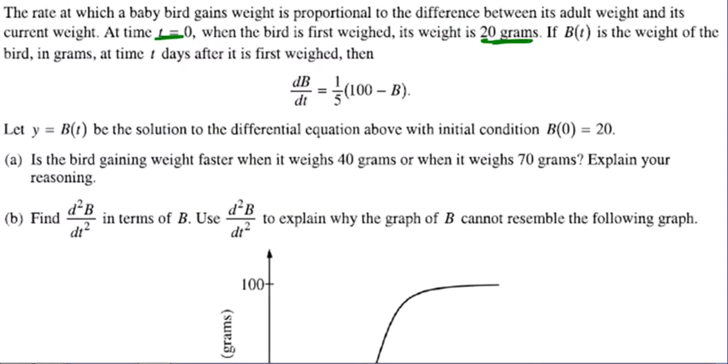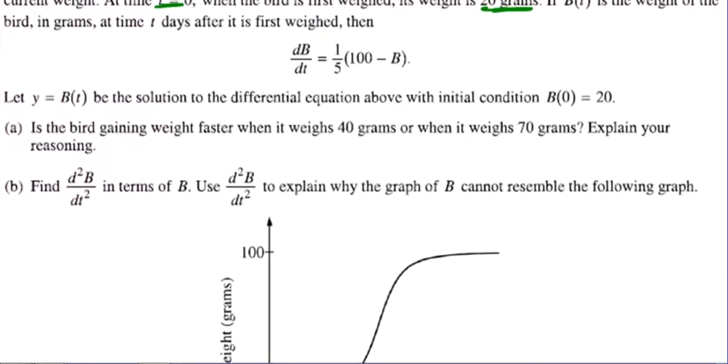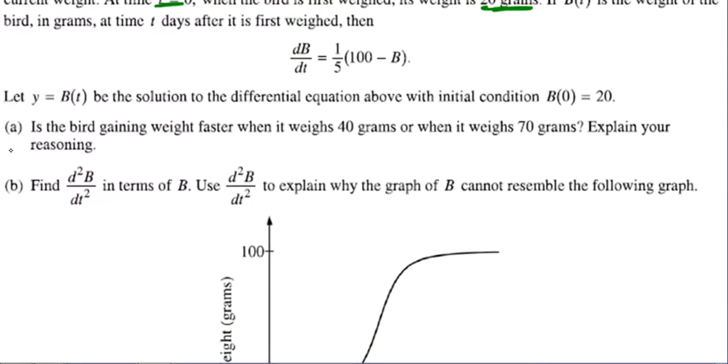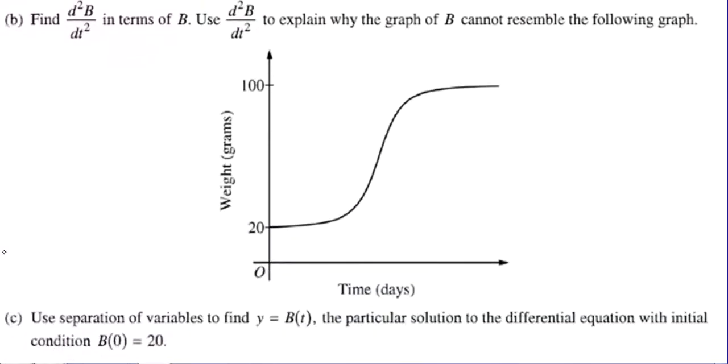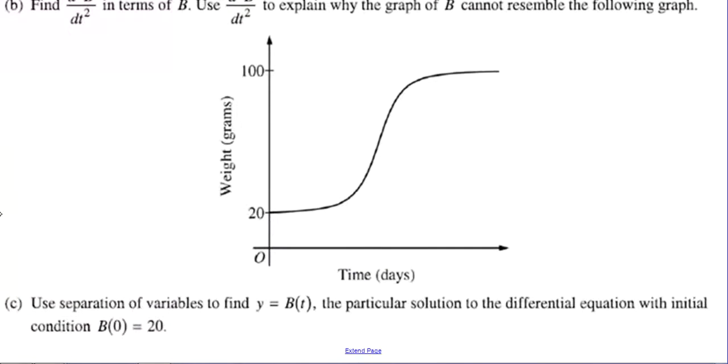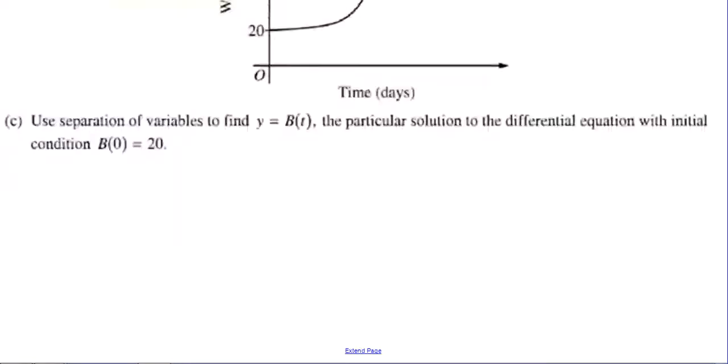So one-fifth must be our proportionality constant there between its adult weight, 100 grams apparently, minus its current weight. Okay, so I just wanted to explain where that equation came from because that may help you with the problem. I've seen problems on the multiple choice section where they give you an explanation like that in words and then they ask you to match it to its differential equation.